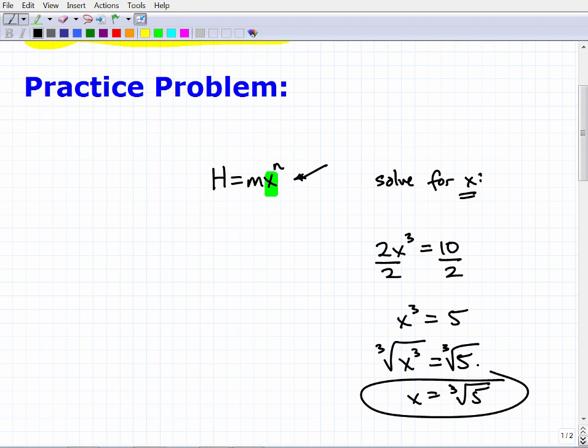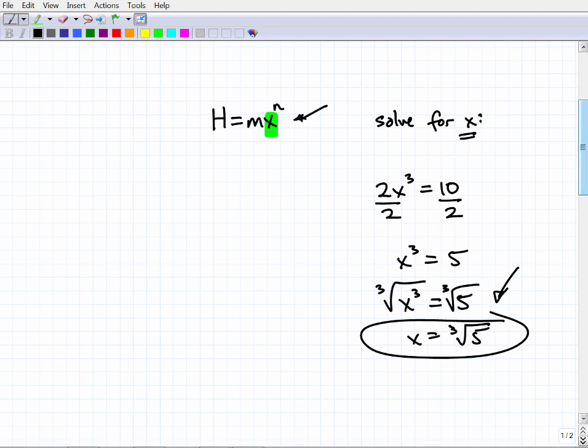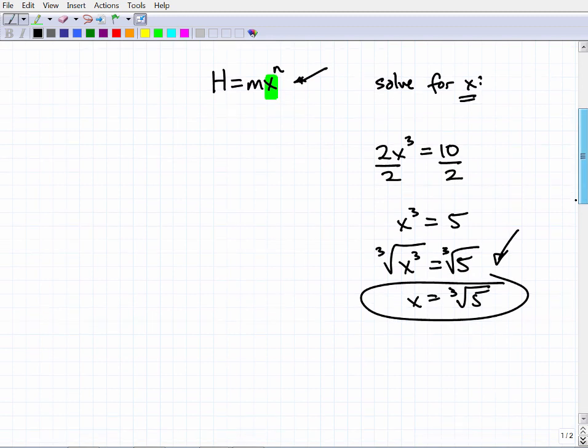Okay, now there are some other details that can involve the signs, whether it's positive or negative, but let's just kind of stick to the basics here. So if you got to this point, that's good. Another way you could have shown this, the cube root of 5, let's kind of go down here, X cubed equals 5.